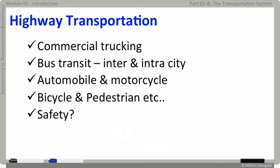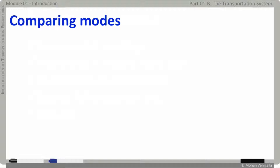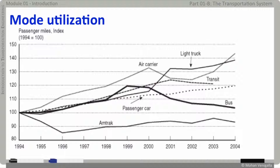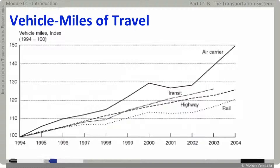Let's see how different modes compare in terms of mobility, freight, and safety. Looking at growth in mode utilization: transit trends — including Amtrak, general transit, and bus — are down or all over the place, while long-term trends for air carriers, passenger cars, and light trucks are up. When looking at vehicle miles of travel (VMT), all trends are up, including transit.